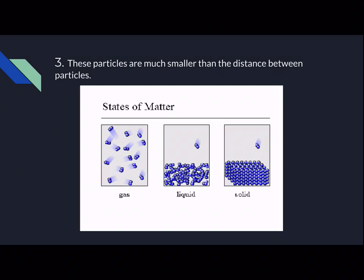Number three: the particles are much smaller than the distance between the gas particles. As seen in a solid, they're really close and tightly packed together. In a liquid, they're a little more free. But in a gas, you can clearly see that they're spread out, going all different directions, moving much more often than any liquid or solid.